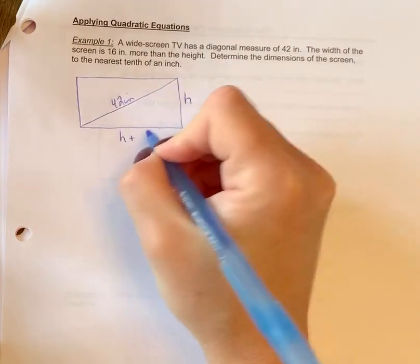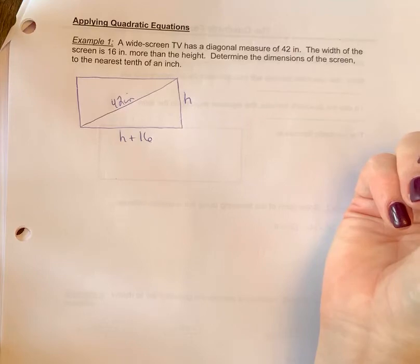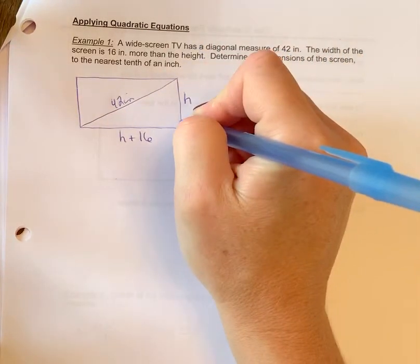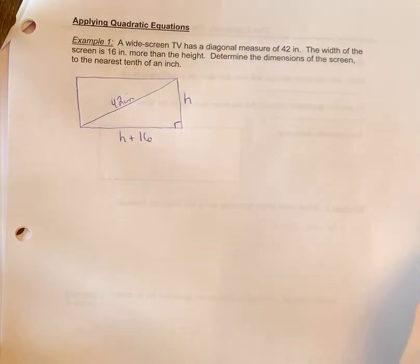So it's height, it's this distance plus 16. All right, determine the dimensions of the screen. So if you take a look here, we've got actually a triangle here, and of course this is a right triangle because it's a rectangular shape.